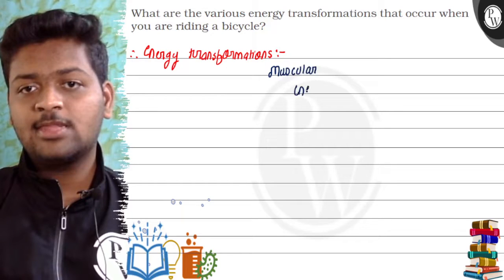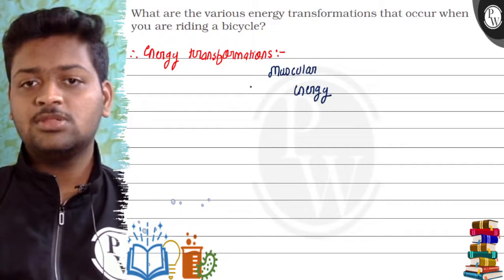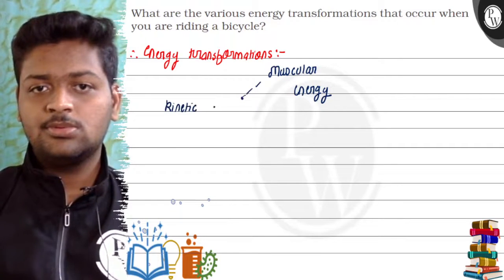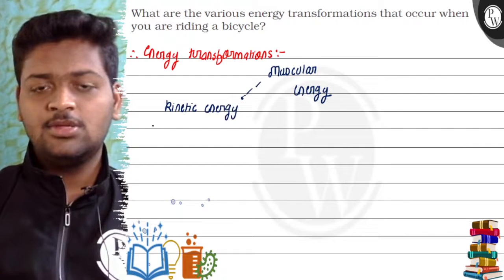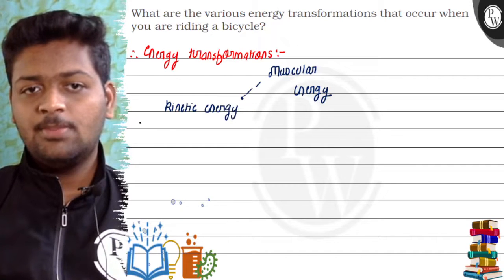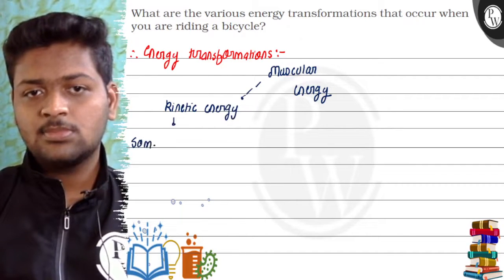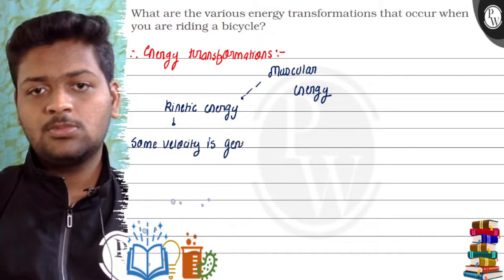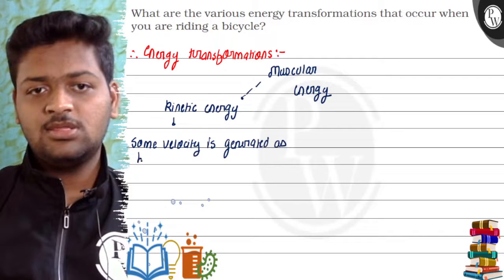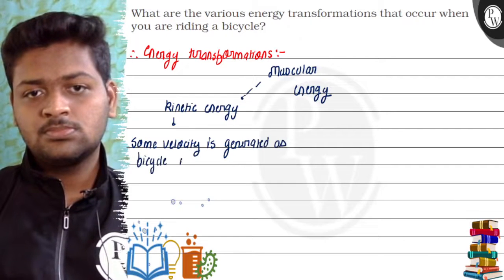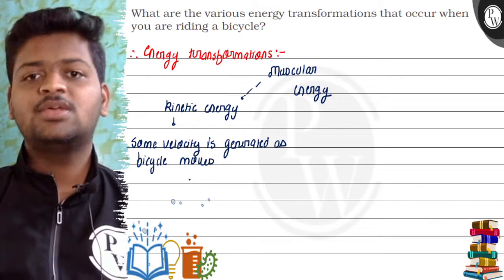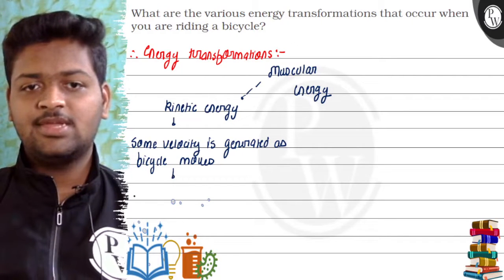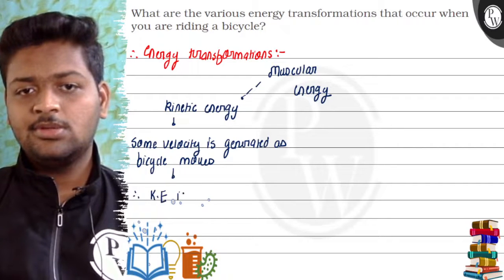We use the energy in our muscles to ride a bicycle. Now, this muscular energy is converted into kinetic energy. When a bicycle is moving, some velocity is generated, and in turn kinetic energy is generated.